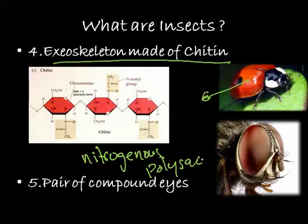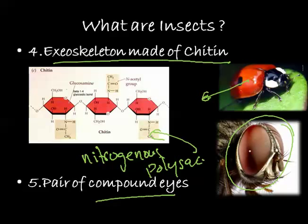Here you can see the formula for chitin. The fifth characteristic is the presence of compound eyes. As in the case of a fly, you can see there is a presence of compound eyes — this is a typical characteristic.